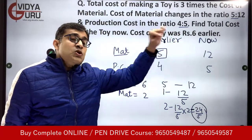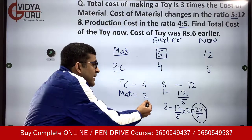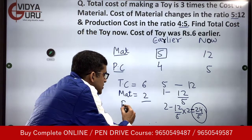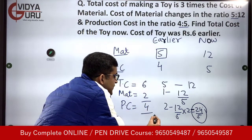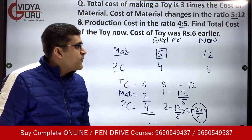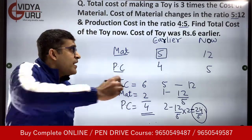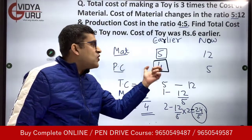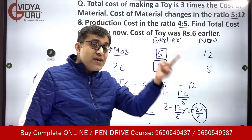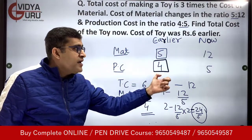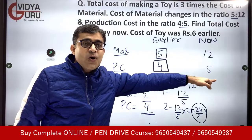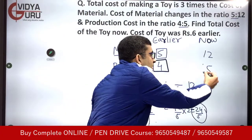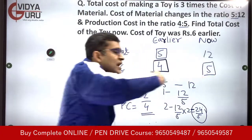The total cost was Rs. 6 earlier, out of which the material cost was Rs. 2, so the production cost was Rs. 4. The production cost has changed in the ratio 4 is to 5, meaning if production cost was Rs. 4 earlier, this 4 has now become 5.